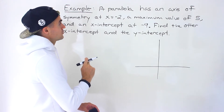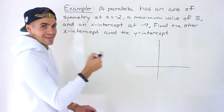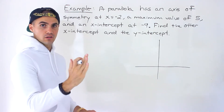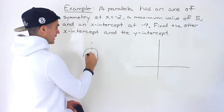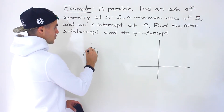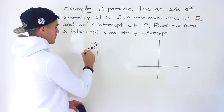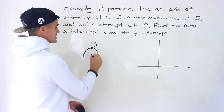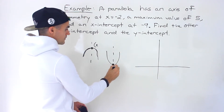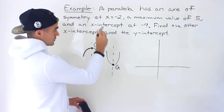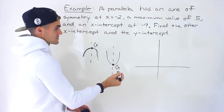We're told the parabola has an axis of symmetry at negative 2. What is an axis of symmetry? It's the vertical line that takes a parabola and cuts it in half. It also represents the x-value of the vertex, whether the parabola opens down or opens up. That axis of symmetry, which in this case is negative 2, represents the x-value of the vertex.